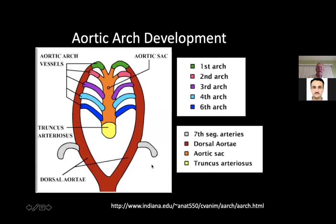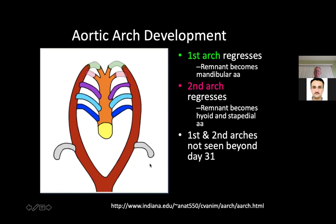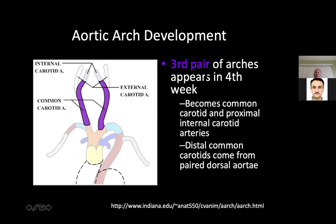The arches are seen bilaterally. The first arch regresses and its remnant becomes the mandibular artery. The second arch regresses and its remnant becomes the hyoid and stapedial artery — not seen after day 31. The third pair of arches appears in the fourth week and becomes the common carotid and proximal internal carotids. The distal carotids come from the paired dorsal aortae.